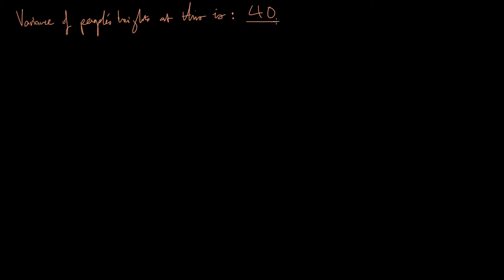We're now well equipped to dispute or confirm this claim, so we decide to conduct an experiment and collect evidence to either prove or disprove it. This person is claiming that sigma squared equals 40 in our population of heights. We go out and collect data, finding that the sample mean of people's heights is 185 and the sample variance is 30.